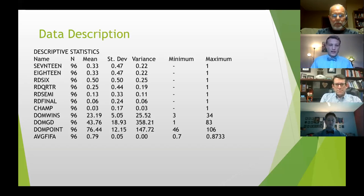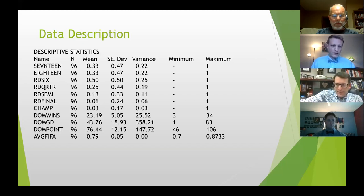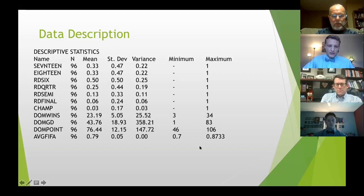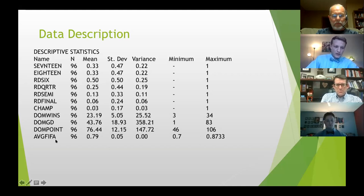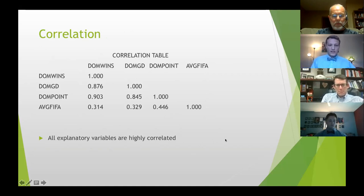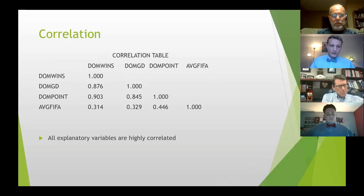The data description slide shows the variables on the left with standard statistics like mean, maximum, and minimum. To give an example, the average FIFA rating at the bottom is my most explanatory variable. You can see the range at which it operated and notice the variance across teams. There's also high correlation among many of the explanatory variables.